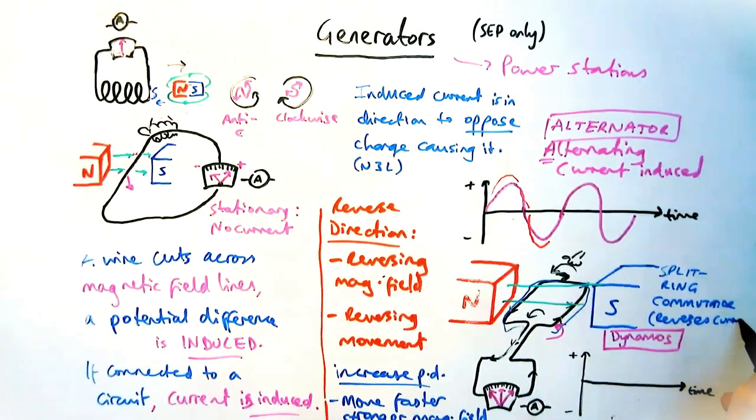And what that does is instead of producing alternating current, it produces direct current, as you'll see in the diagram below.